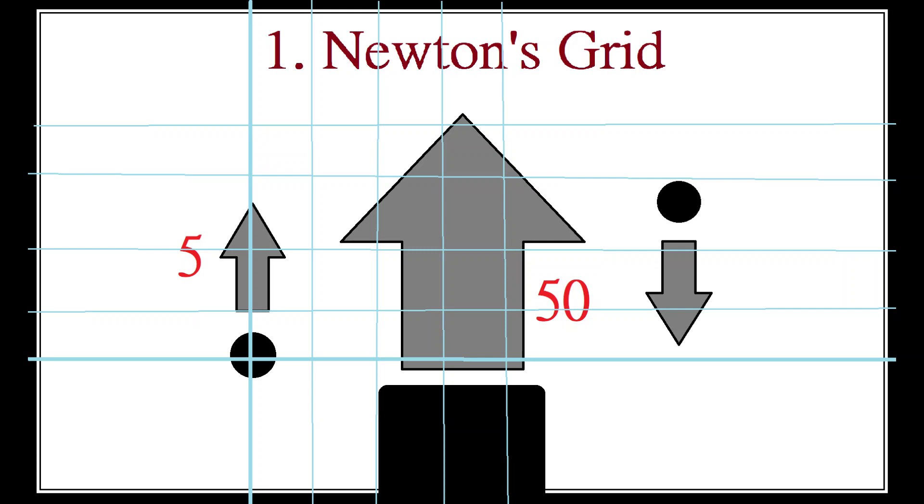This would not be possible, however, without there being an ultimate reference point, or a God's eye view. That reference point is Newton's universal grid, which is taken to be genuinely stationary.